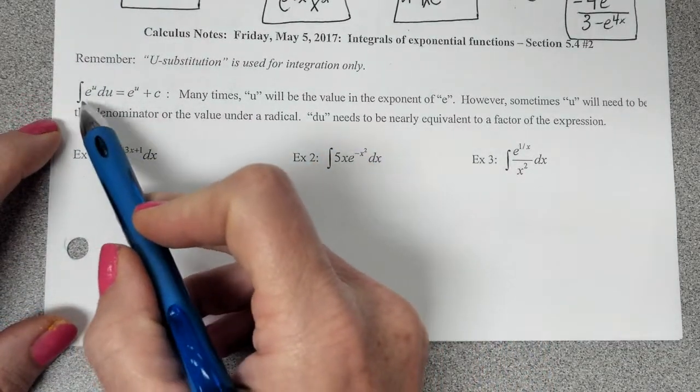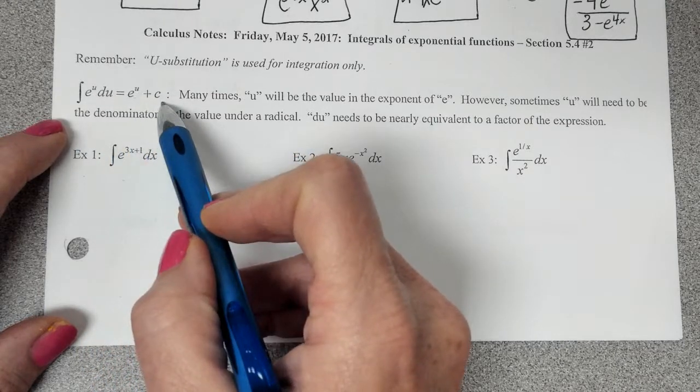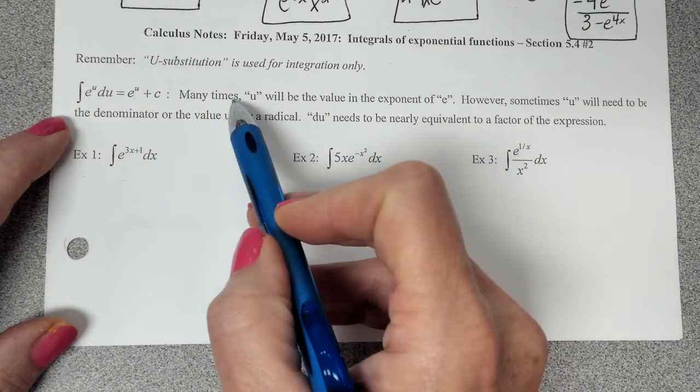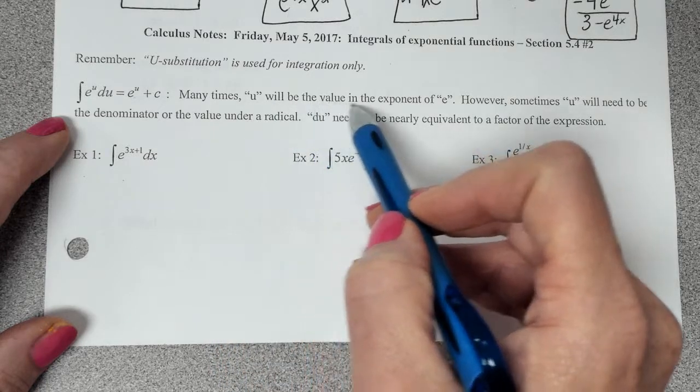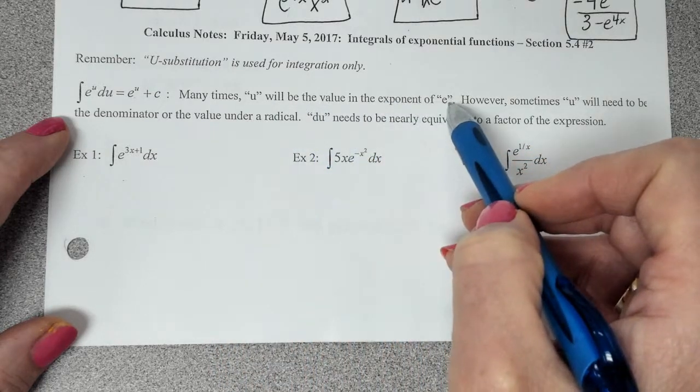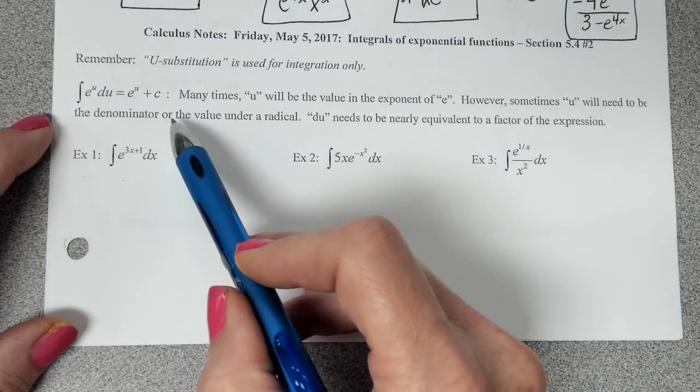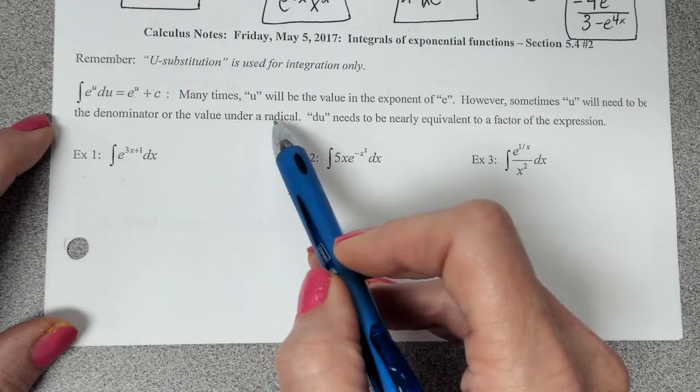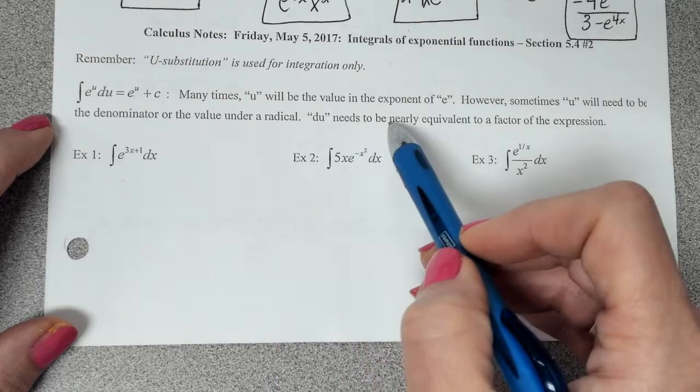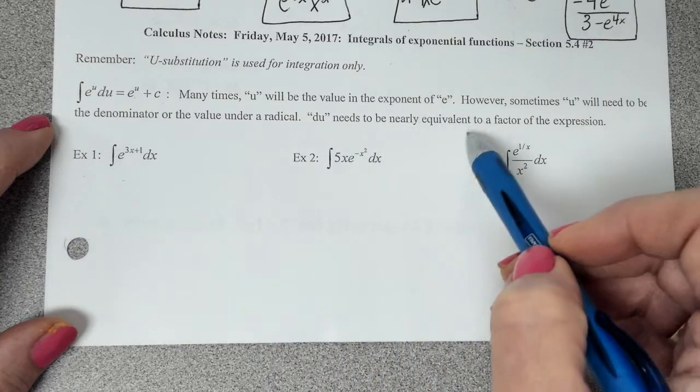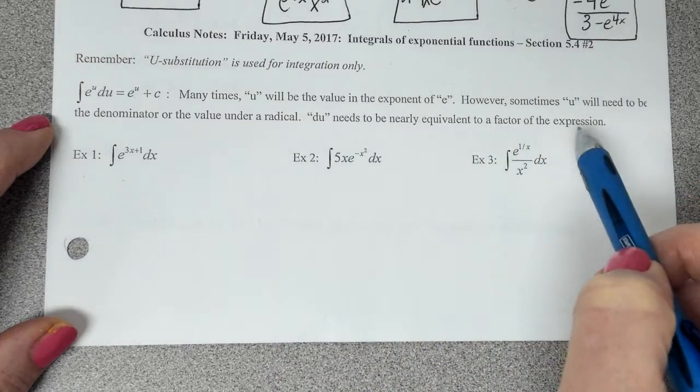The integral of e to the u is just e to the u plus c. Most of the time, u is going to be the value in the exponent of e. However, sometimes u will need to be the denominator or the value under a radical. du needs to be nearly equivalent to a factor of the expression.